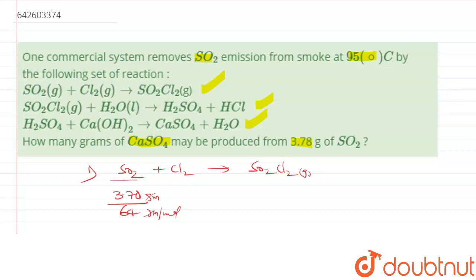Now, this 3.78 divided by 64, so this is almost 0.06 mole. So if this one mole is producing one mole, so this will be 0.06 mole? Yes.